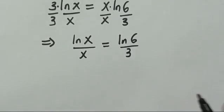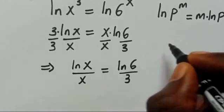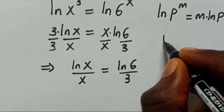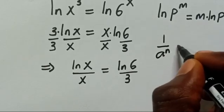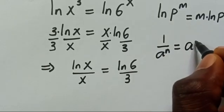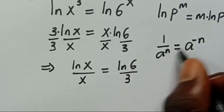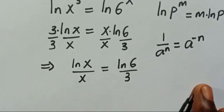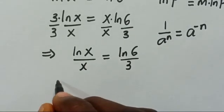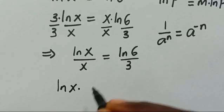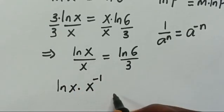Now recall that 1 divided by a to the power of n equals a to the power of minus n. Since our x term has an implicit power of 1, we can rewrite this as ln(x) multiplied by x to the power of minus 1.